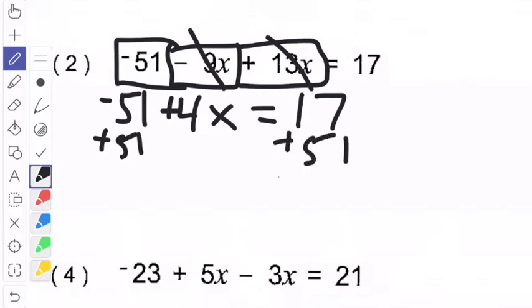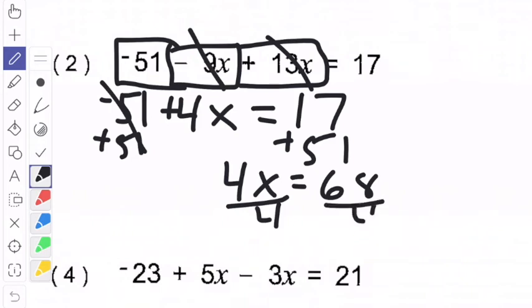And when I add 51 to both sides of the equation, they cancel out. I get 4x equals 68. So what I need to do now is I need to divide by 4 because we're multiplying by 4 here. So divide by 4 on both sides of the equation. And x will equal 17.